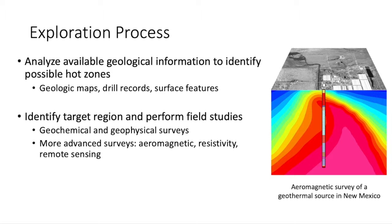Getting into the exploration processes, once a resource is identified, the process of further exploration has to begin. The engineers and geoscientists come in and start analyzing existing geological information, such as geologic maps, georecords, and other surface features, in order to identify a target region on which to perform more in-depth field studies, which come in the form of geochemical and geophysical surveys. Even more advanced are the aeromagnetic resistivity and remote sensing, which cost a lot of money and involve very complex types of sensors and drilling.